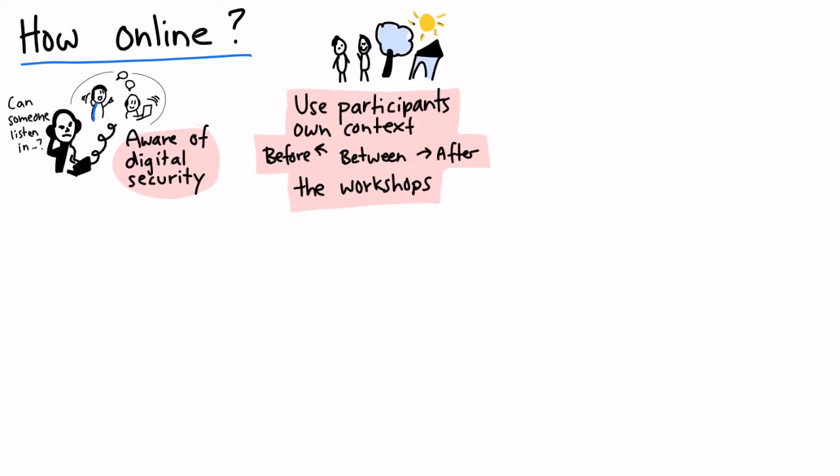For political empowerment, using participants' own context and experience is essential. And meeting online should force us even more to use it as part of the training. We do that by giving them tasks and assignments they can do before, in between, or after the sessions. They can do tasks alone, but it's even better if they can do tasks or projects together in smaller groups.